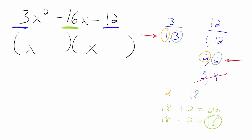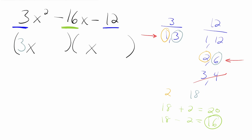Now we're going to take the factoring pair underneath the number 3 — in this case that's 3 and 1 — and put those in front of the x's. You don't have to write the 1 in front of the x; we just know it's already there. At this point we know that the 2 and the 6 go in the other two slots. The outside terms have to multiply to 18, so the 6 goes out there. And the inside terms have to multiply to get us 2, so the 2 goes there.